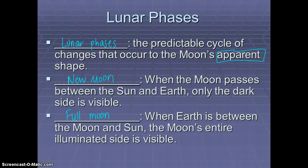New Moon is when the Moon passes between the Sun and Earth, and only the dark side is visible to us. It's actually there, but it's dark in the sky. Full Moon is the opposite—this is when Earth is between the Moon and Sun, and the Moon's entire illuminated side is visible.